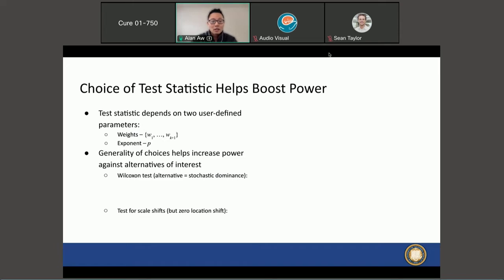As two examples: for the standard Wilcoxon test where the alternative we have in mind is stochastic dominance, we can use a specific parameterization. However, if we're interested in an alternative characterized by more of a scale shift rather than stochastic dominance—so the mean or median could be the same but the variance could be shifted—then we would use another parameterization as shown in this slide.